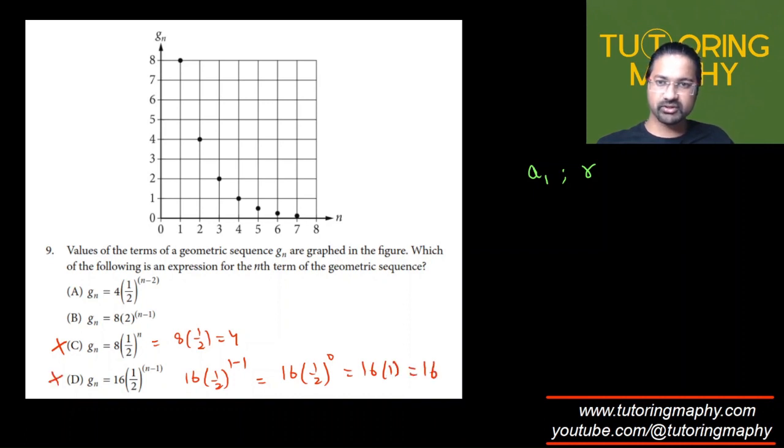If I put 1 over here, then this will become 8 times 2 raised to 1 minus 1, which is 2 raised to 0, which is 1, giving 8, so this is possible. And if I put 1 over here, that is also possible because this will become 4 times 1 over 2 raised to minus 1, which is 4 times 2, which is just 8. So this is also possible, and we have ruled out two options from here.